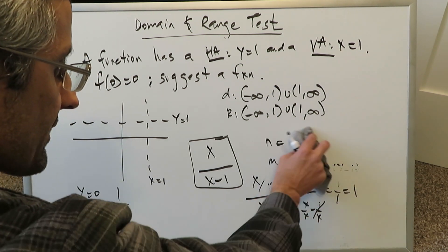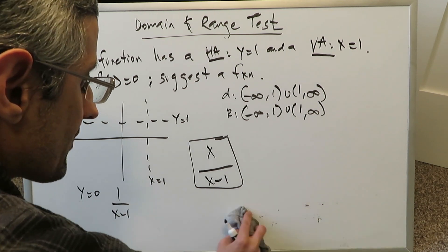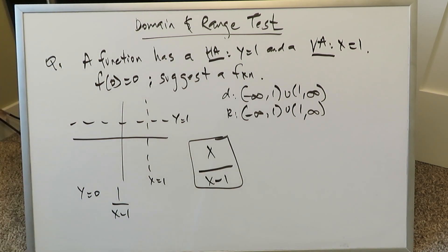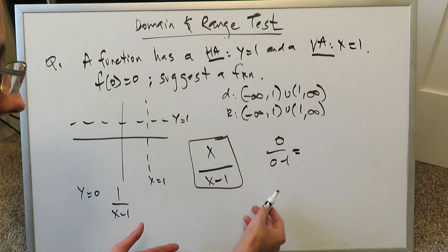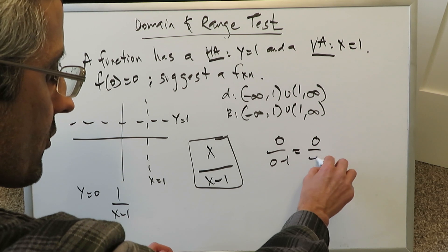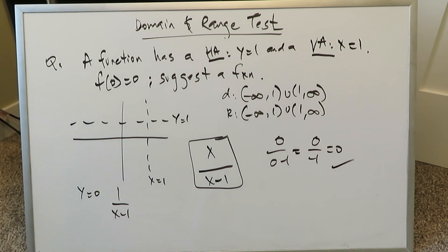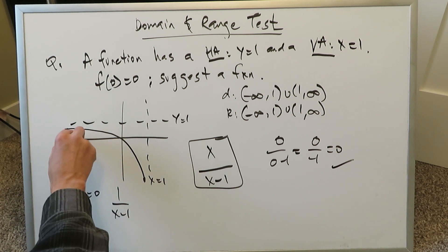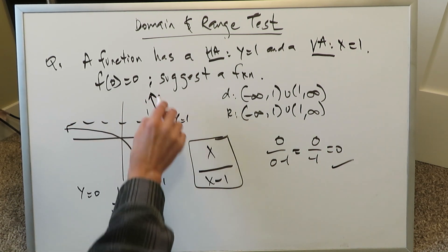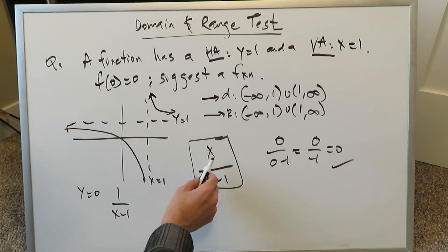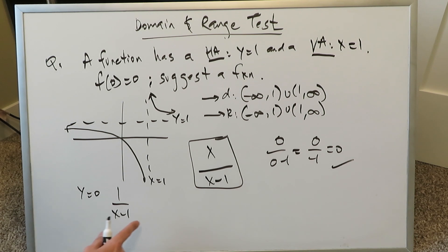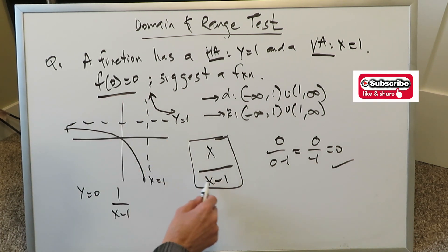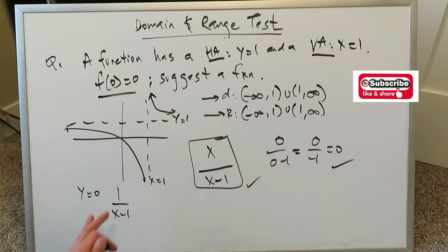The fact that f of 0 equals 0 further confirms our function. Substituting x equals 0 gives 0 divided by 0 minus 1, which is 0 over minus 1, equaling 0 — the origin is indeed involved and the function is not undefined there. The function x over x minus 1 fits all criteria. When graphed with the horizontal and vertical asymptotes, it gives a good idea of this rational function. There could be other options, but this one satisfies all the given conditions.